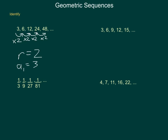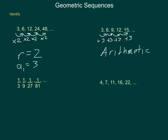Let's take a look at the next sequence: 3, 6, 9, 12, and 15. From 3 to 6, I add 3 or multiply by 2. But from 6 to 9, I can add 3, though there isn't an easy number to multiply by. And then 9 to 12, I'm adding 3; 12 to 15, adding 3. Because I'm always adding 3 and not multiplying, this is not geometric — this is arithmetic. You might want to go back and review the lesson on arithmetic sequences.